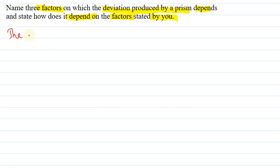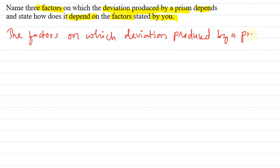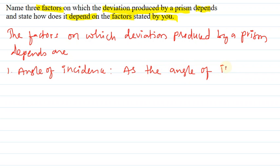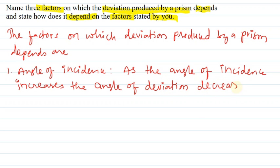The factors on which deviation produced by a prism depends are: First one, angle of incidence. As the angle of incidence increases, the angle of deviation decreases.